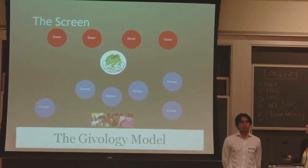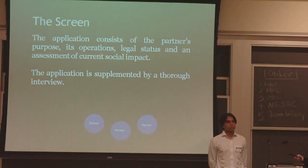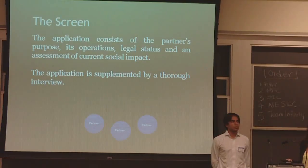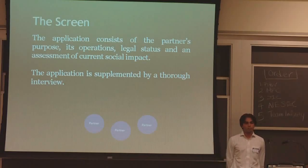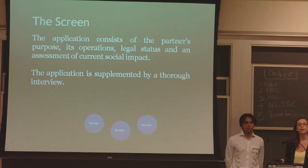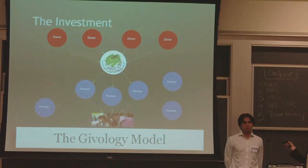Immunology chooses its partners through a screening process that consists of the partner's purpose, its operations, legal status, and assessment of current social impact, supplemented by immunology review. This diagram shows the flow of funds in the immunology model.